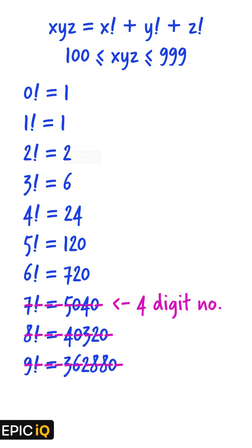Now, let us consider the possibility of 6 as a value. The factorial of 6 is 720. So, the sum of the 3 factorials will be greater than 720. That means the value of the first digit in the number xyz, the letter x, will be 7 or more.